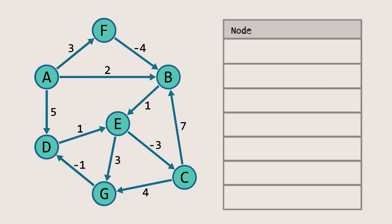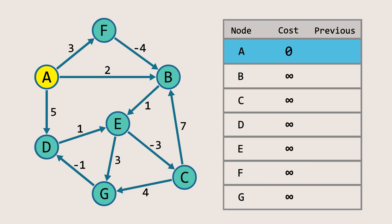Now, coming to our example, let's first initialize the table. We'll consider node A as our source node. So we set the cost of node A to zero as it's already there, and then set the cost to all the other nodes to infinity. The previous node for all nodes is set to none. Since the total number of nodes is seven, we need to check this algorithm for at most six times, which is v minus one, where v is the number of nodes.